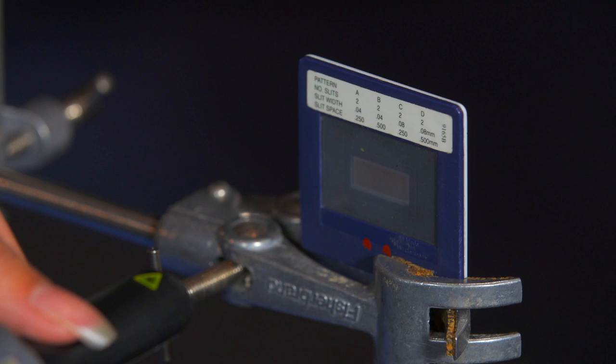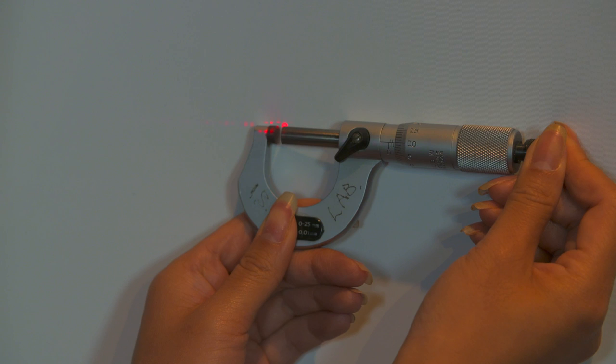Our laser has a wavelength of 650 nanometres. At a distance of one metre, we expect the fringes to be separated by 2.6 millimetres. Here, I measure it to be 2.6 millimetres.